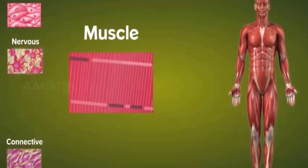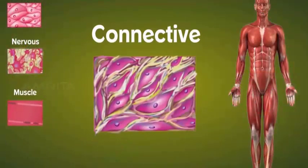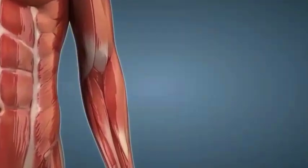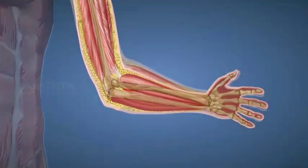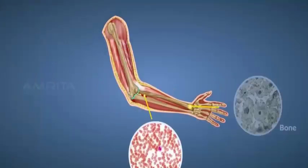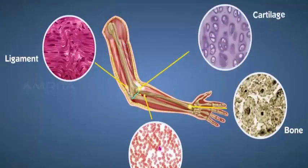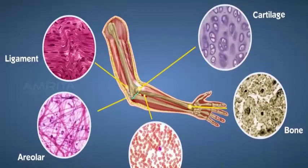The final tissue we look at is the connective tissue that binds and supports body parts and transports materials. Connective tissues are subdivided into blood, bone, ligament, cartilage, areolar, and adipose tissue.